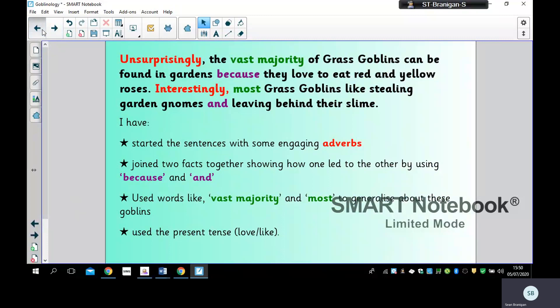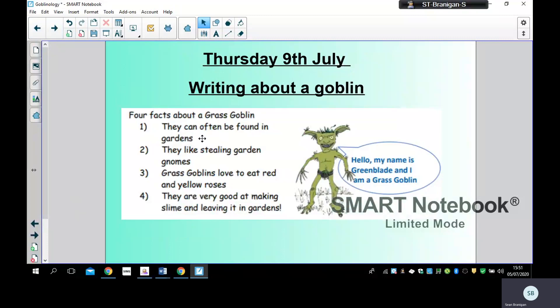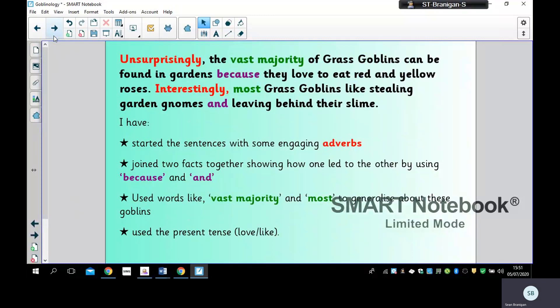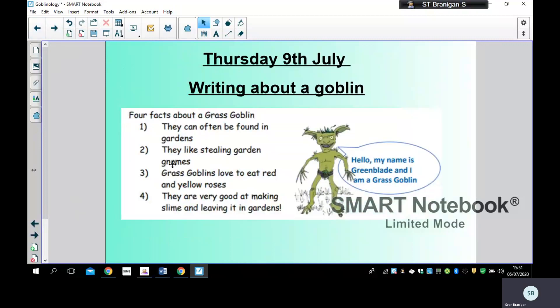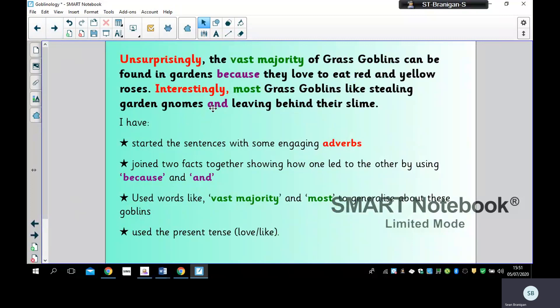So I linked the garden sentence, which is number one, and their love of eating yellow and red roses together using because. And I linked the second sentence, which was stealing garden gnomes and leaving slime sentences together using and.